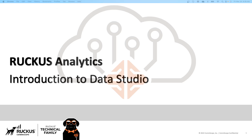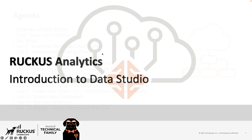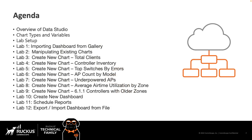Hi, and welcome to the Ruckus Analytics Introduction to Data Studio walkthrough. I'm Terry Henry. Today we're going to talk about an overview of Data Studio. We will cover chart types and variables, lab setup, importing a dashboard from a gallery, manipulating existing charts, creating new charts of several kinds — total clients, controller inventory, top switches by errors, AP count by model, underpowered APs, average airtime utilization by zone, and 6.1.1 controllers with older zones. We'll create a new dashboard, schedule some reports, and import and export dashboards from a file.